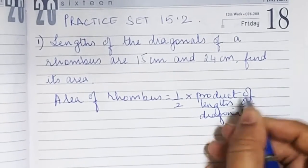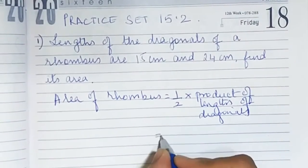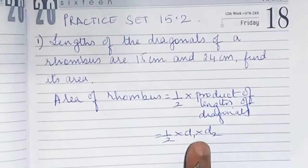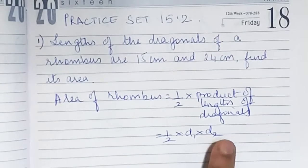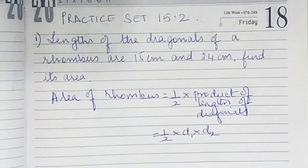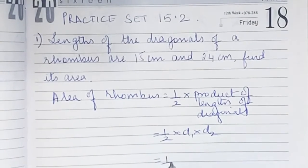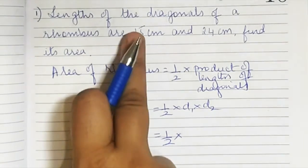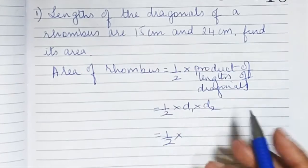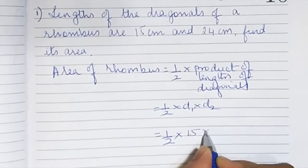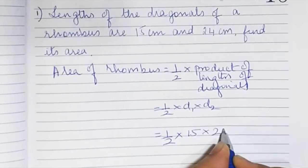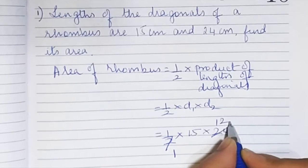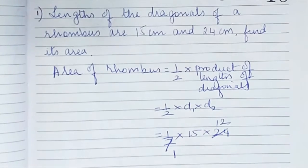We write it as half into d1 into d2, where d1 stands for diagonal 1 and d2 stands for diagonal 2. Here, d1 is 15 and d2 is 24. So we have half into 15 into 24. The 2 and 24 cancel to give 12.